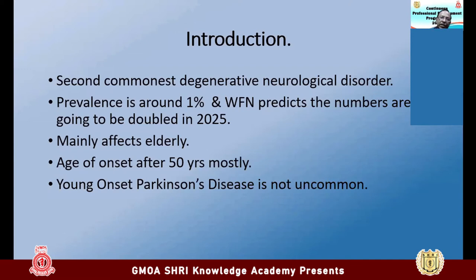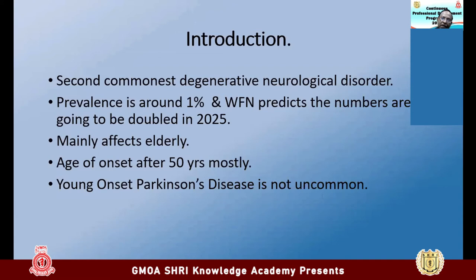The commonest neurodegenerative condition is Alzheimer's disease; Parkinsonism is the second commonest. The prevalence of Parkinsonism is around 1%, and in this country with around 20 to 22 million population, we should see about 220,000 patients. The World Federation of Neurology's World Brain Day campaign predicted that by 2025, this number is going to double.